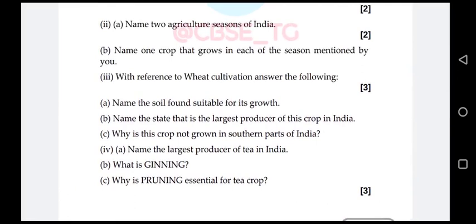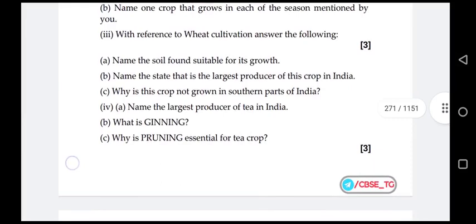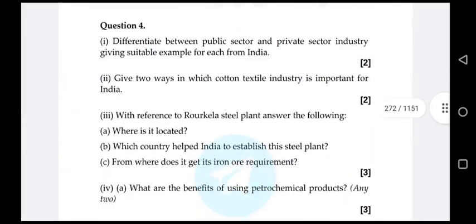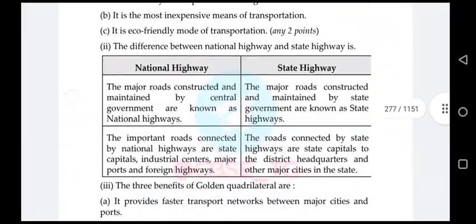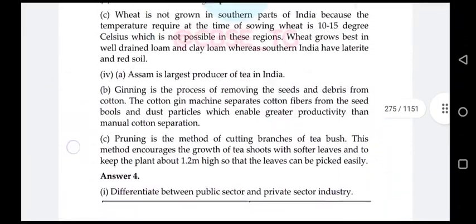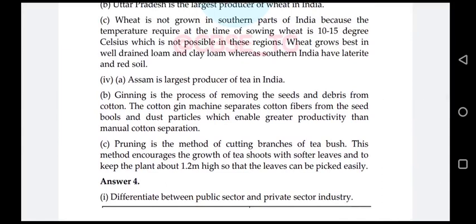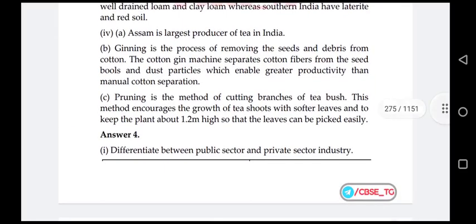Question number four: name the largest producer of tea in India, what is ginning, and why is pruning essential for tea crop. The highest producer of tea is Assam. Ginning is the process of removing seeds and debris from cotton using a cotton gin machine, enabling greater productivity than manual separation. Pruning is the method of cutting branches of tea bushes to encourage growth of shoots with softer leaves and to keep the plant about 1.2 meters high for easy picking.